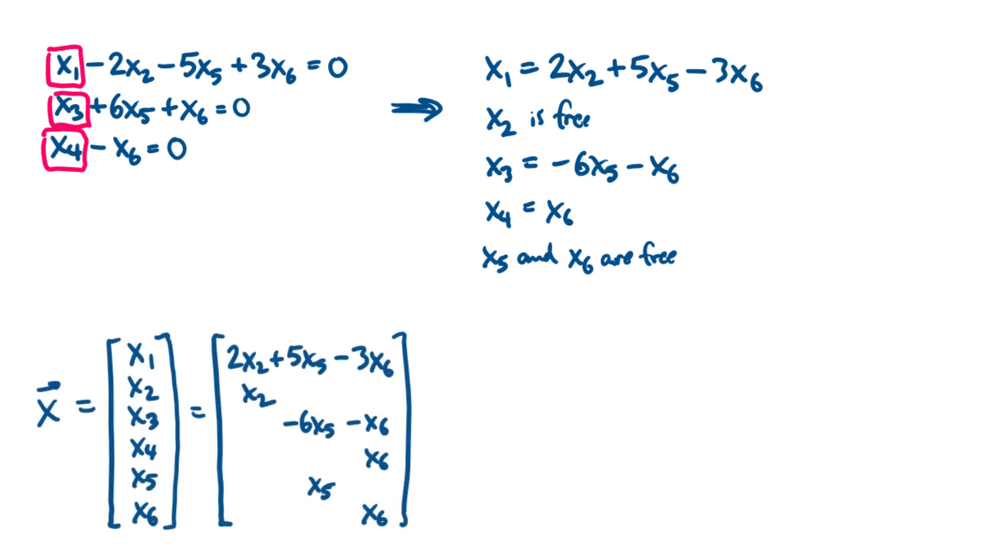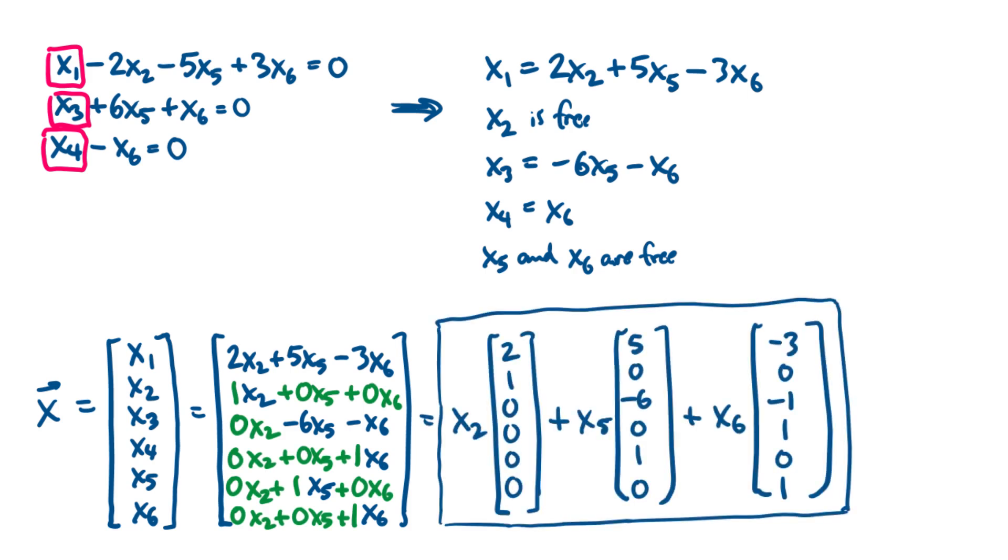Now what do we do with this general solution to get the parametric vector form solution? Well we write our solution vector x, we've got six variables, so this vector has six entries, and we use the general solution to rewrite each variable in terms of the free variables. And again notice how I've aligned everything so that all the x2s are vertically aligned, the x5s and the x6s. I fill in the missing coefficients, and then I split up this vector and then factor out the free variables, and so in this case the solution set is the span of these three vectors that you see here.